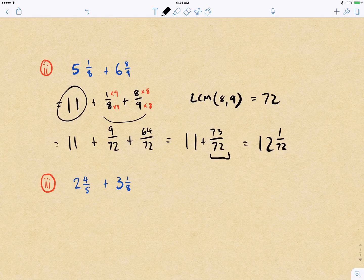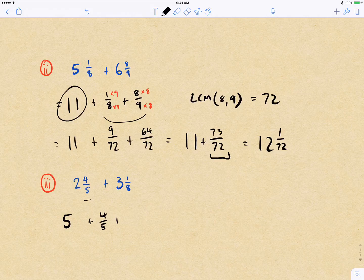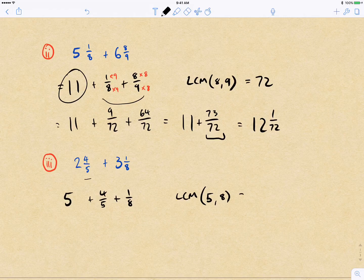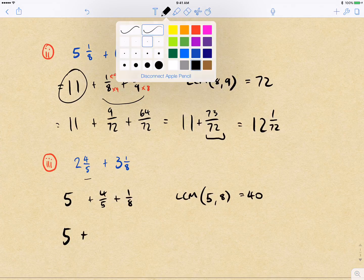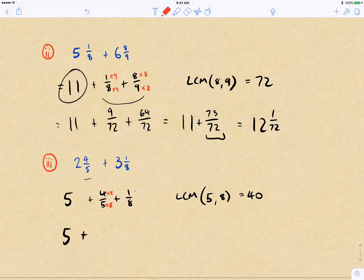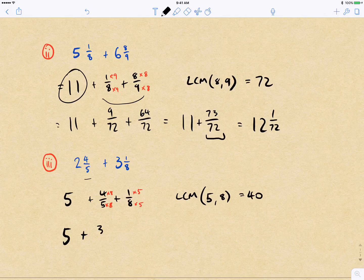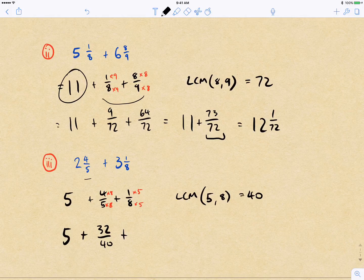And then finally here, we've got 2 and 4 fifths plus 3 and an eighth, so the 2 plus 3 gives us 5, so we're adding plus 4 fifths plus an eighth. And the lowest common multiple for 5 and 8, again, is just 5 times 8, which equals 40. And so here we're going to have 5 plus, multiplying these by eighths and these by fifths, so the equivalent fractions are 32 on 40 plus 1 eighth plus 5, 5 on 40.